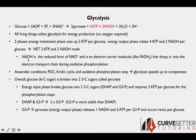NADH is the reduced form of NAD+; it's a cofactor and essentially an electron carrier molecule, as is FADH2. FADH2 is the reduced form of FAD+. What these molecules do is carry electrons from metabolic processes to the electron transport chain, where those electrons feed into the chain during oxidative phosphorylation and are used to produce ATP. You can just think of them as electron carriers.